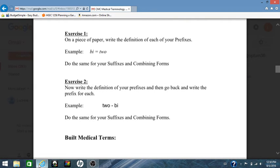So your exercises for this unit. On a piece of paper, write the definition of each of your prefixes. For example, bi equals to. Do that for your prefixes, your suffixes, and your combining form. Because remember, here at Codemaster Coach, we believe that when you write things down, it tends to stay with you. Because you write it, you're practicing it.